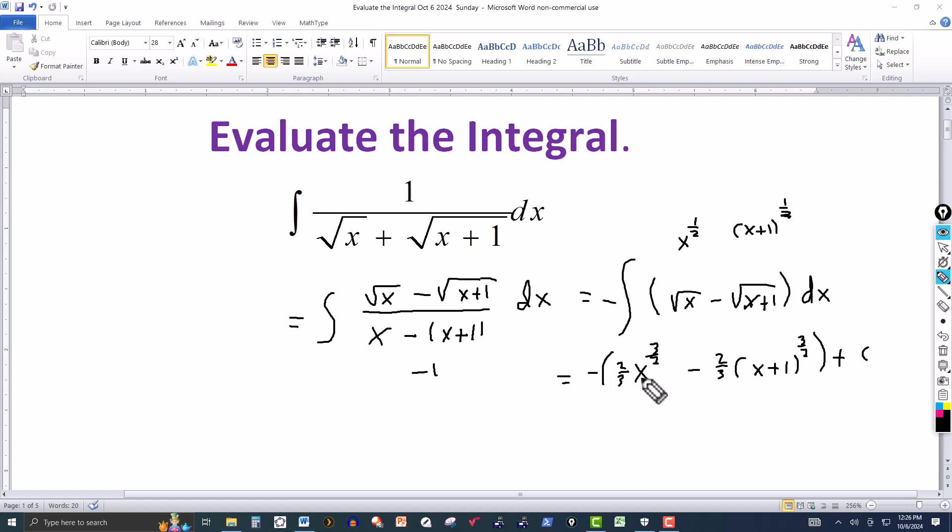And I can distribute the negative here. So this would be a plus here, and this would be a negative here. So the final answer is minus 2 thirds x to the 3 halves plus 2 thirds x plus 1 to the 3 halves plus C.